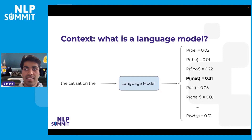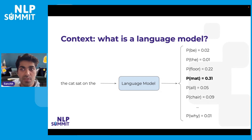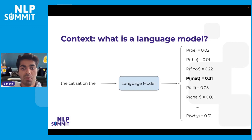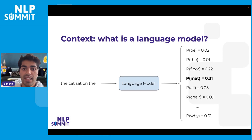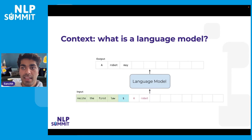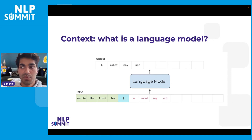To understand BLOOM, we first need to understand what language models are. First, we define a prompt that we feed into the language model, shown here on the far left. The language model, highlighted in blue, takes the prompt and computes the probability of the next word. We can then generate a string of outputs by recursively feeding the language model outputs back into the inputs.